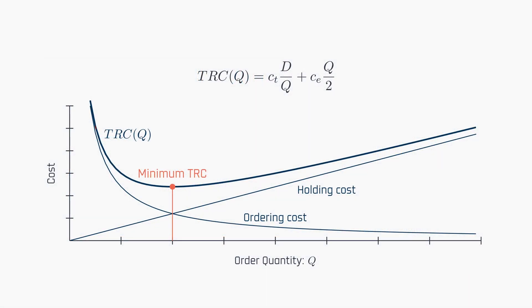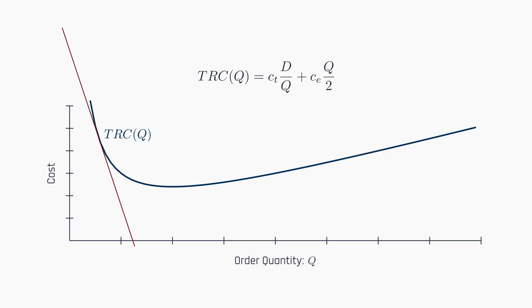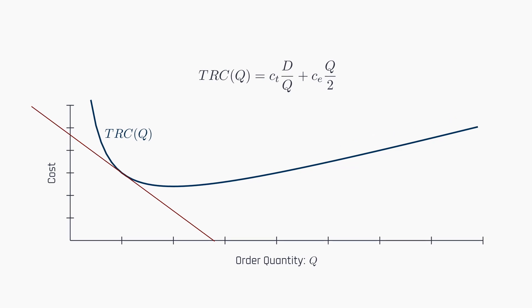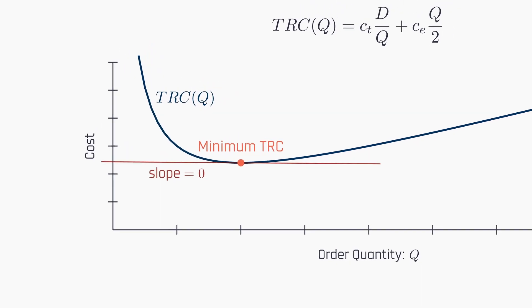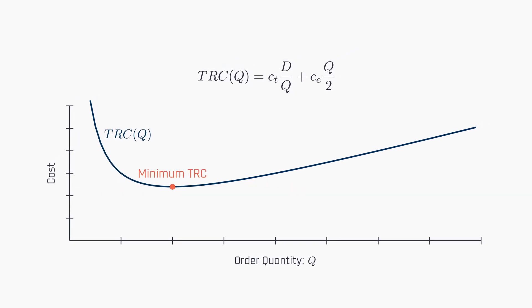In a nutshell, derivatives help us determine the slope of tangent lines to a function. To minimize the total relevant cost, our focus is on identifying the specific tangent line with a slope of zero, as this indicates the function's minimum point. So, to determine the optimal value of Q that minimizes the total relevant cost, we take the derivative of the cost function with respect to Q and set it equal to zero. This approach locates the precise point where Q yields the minimum cost.